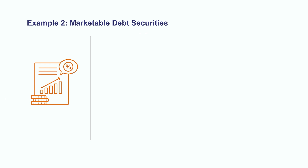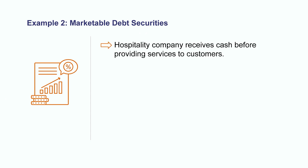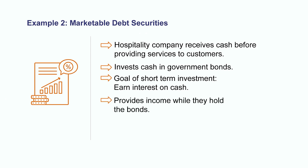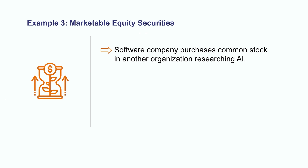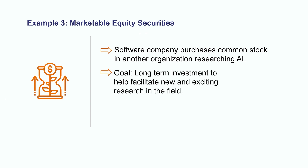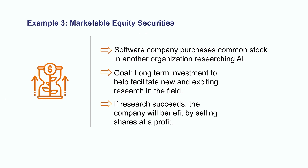In example number two, we have a hospitality company that provides hotel and vacation packages and they receive cash from their customers before providing any services. Instead of letting that cash sit and collect dust in their account, they decide to invest those funds in government bonds. The goal of this short-term investment would be to earn interest while holding the bonds, providing additional income until they eventually sell the bonds once they need to access the cash. In example number three, a software company decides to purchase common stock of another organization that does research in the artificial intelligence space. Their goal is to keep their investment in this organization for the long term to help facilitate new and exciting research in the field. If the research succeeds, they'll be able to directly benefit in their business and can also sell their shares at a future date for a profit.